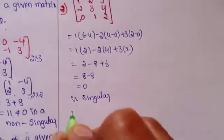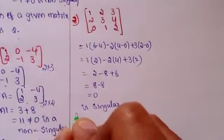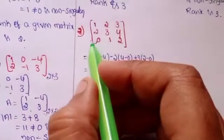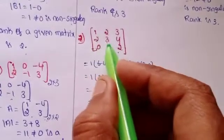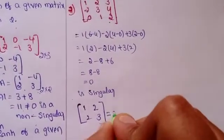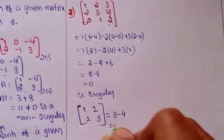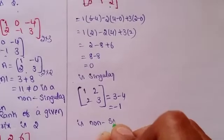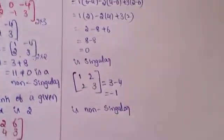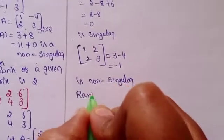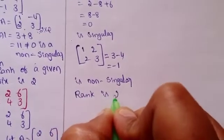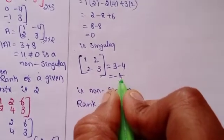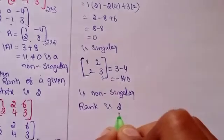Since the determinant is 0, we take a sub-matrix. Removing the third row and third column gives sub-matrix 1, 2 / 2, 3. The determinant is 3 minus 4 = minus 1, which is non-singular. Therefore the rank is 2.